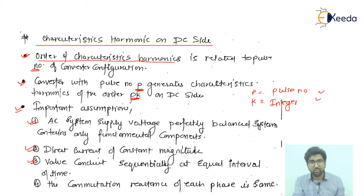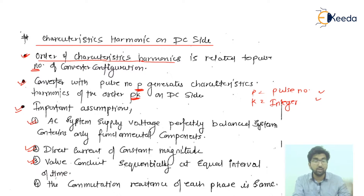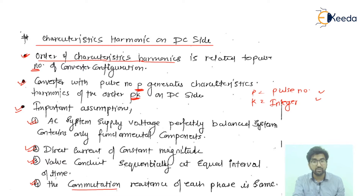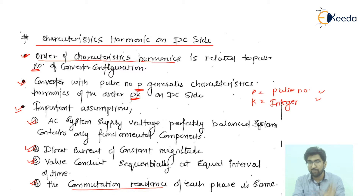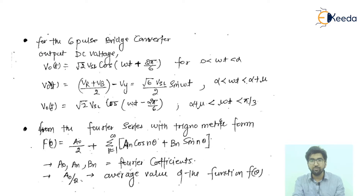The third assumption is that the valves conduct sequentially at equal intervals of time. For a six pulse converter, each thyristor operates every 60 degrees. For a 12 pulse converter, each thyristor conducts every 30 degrees. The fourth assumption is that the commutation reactance of each phase is the same — the commutating reactance for each phase is assumed to be constant so that calculations and manipulations will be easier.